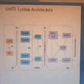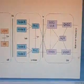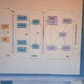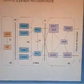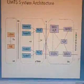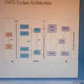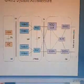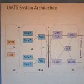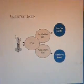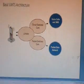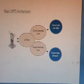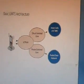The UMTS system architecture consists of the UE — User Equipment — UTRAN — UMTS Terrestrial Radio Access Network — and the CN — Core Network. The main components of UTRAN are Node B and RNC. The core network consists of GSM and its components. The basic UMTS architecture consists of UTRAN, the circuit-switched domain for voice calls and SMS, and the packet-switched domain for packet data network.